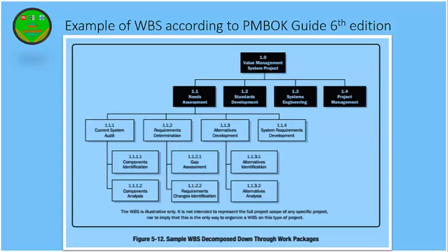The first WBS element is Needs Assessment, the next one is Standards Development, then Systems Engineering, and the last one is Project Management. So the first WBS is divided into four sub-WBS elements. The first sub-WBS has two other activities, the second sub-WBS also has two other activities, the third one also has two activities, but the final one has no further breakdown — it is itself an activity. This is an example of WBS according to the PMBOK Guide 6th edition.